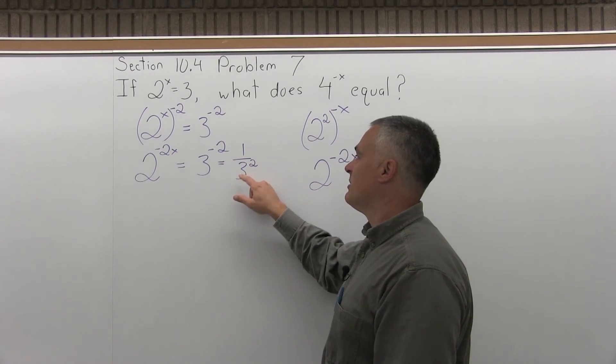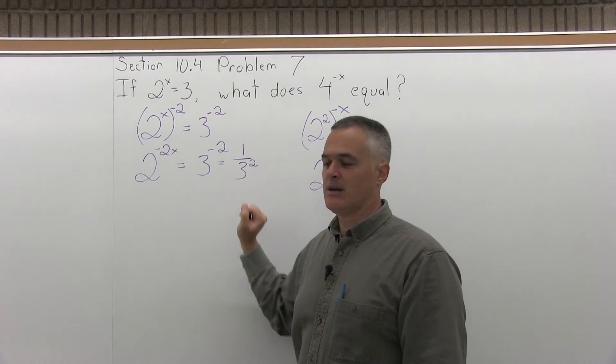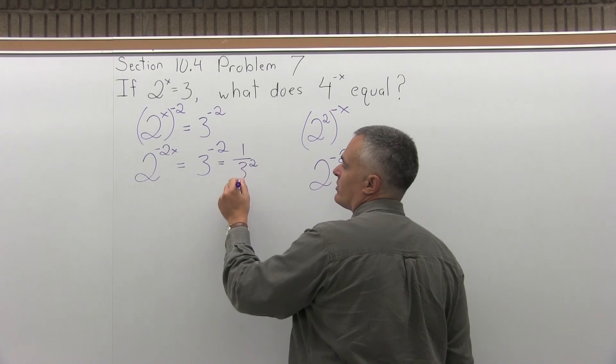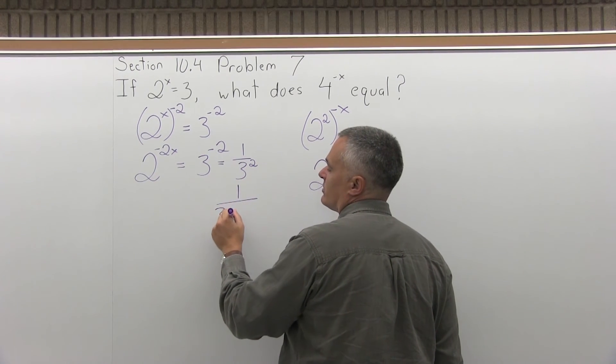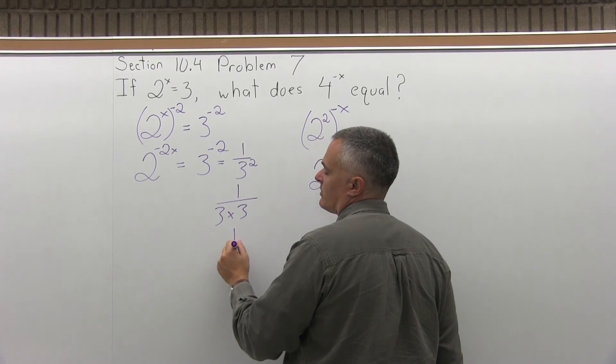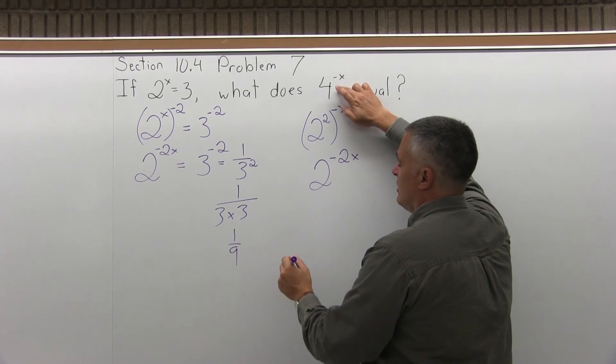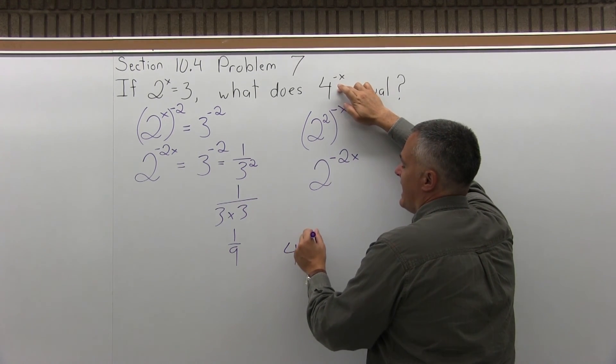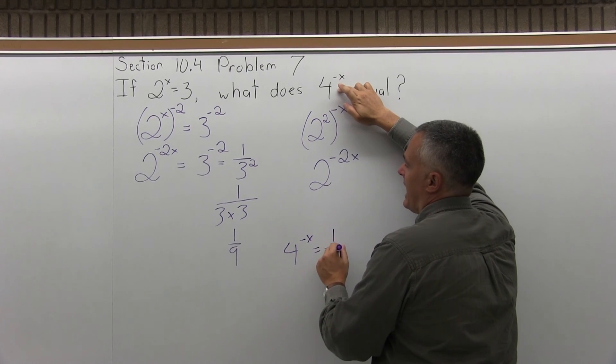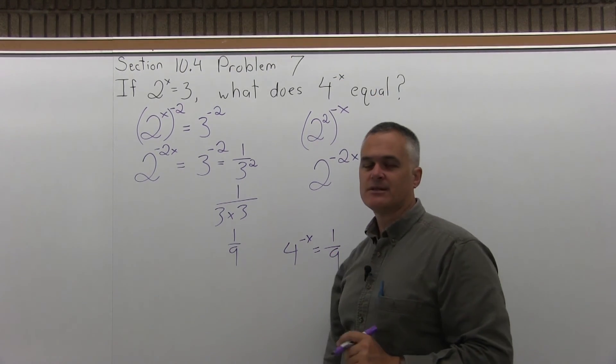It means that the exponent is really modifying something that's in the denominator. And then, 1 over 3 to the 2 is 1 over 3 times 3, which is 1 over 9. So, back to the original question, 4 to the negative x is equal to 1 ninth. And that's the answer.